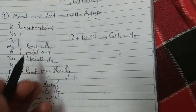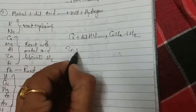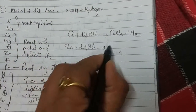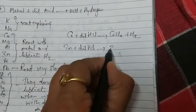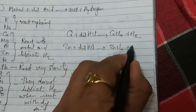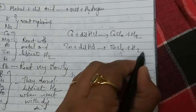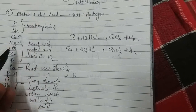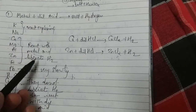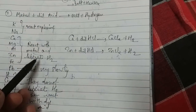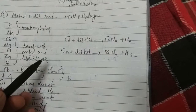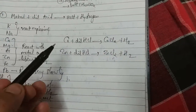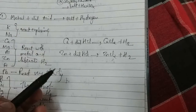Zinc reacts with dilute hydrochloric acid to produce zinc chloride plus hydrogen. Now, when these active metals react with dilute acid, while the reaction is going on, we observe some important points.